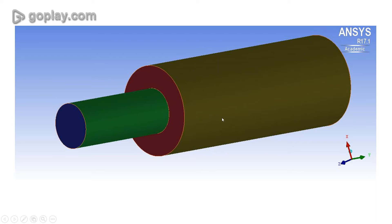For example, this might be a rectangular or cuboidal shape geometry joined to a cylinder, or a spherical shape geometry joined to a cylinder. For most of these geometries the blocking philosophy will be the same as discussed in this video lecture.